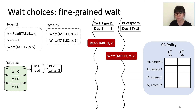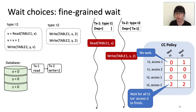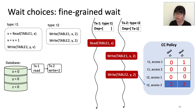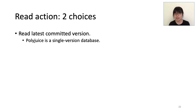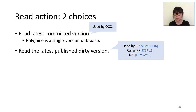We enhance the implementation to support fine-grained waiting by changing the wait action from a binary choice to an integer value choice. For example, 0 means no wait, while 2 means wait until dependent transactions of type T1 have finished executing their second access. For a read access, it can choose which version of the data to read. Polyjuice supports reading the latest committed version (as in OCC) or reading the latest published dirty version, which is used in existing works such as IC3, KSRP, and DRP.